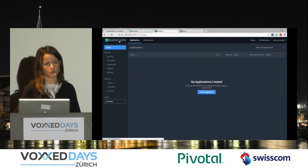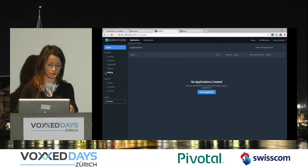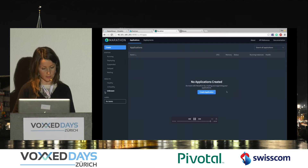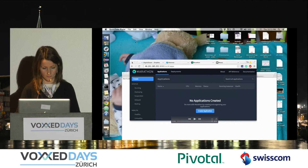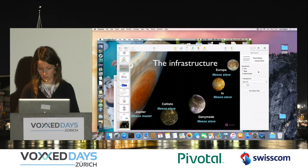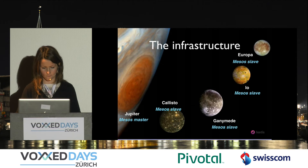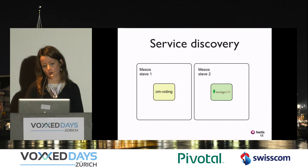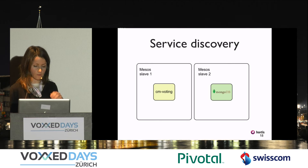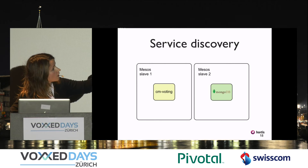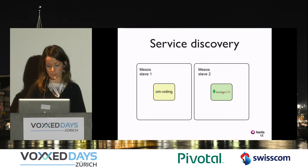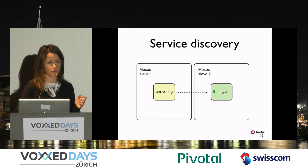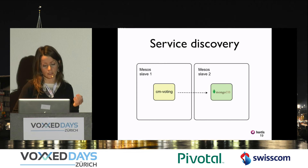This is the Marathon UI portal. In this UI we can see all running applications, those being deployed, those that are suspended, and the results of health checks. We have the web app — CM voting — and the database, which is MongoDB. We're going to need service discovery because CM voting needs to access the database — specifically to find the IP, port, and credentials.